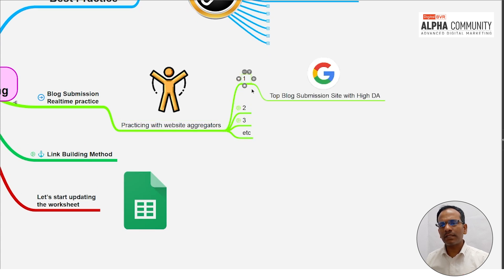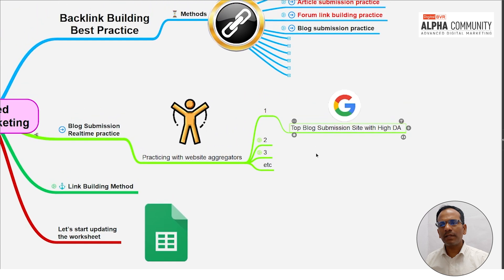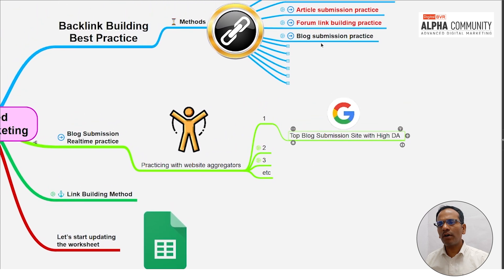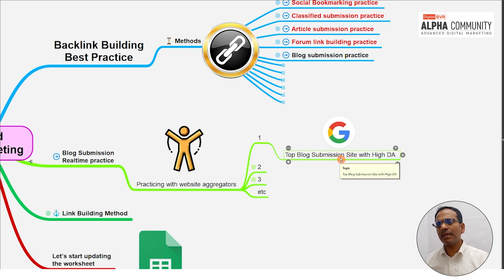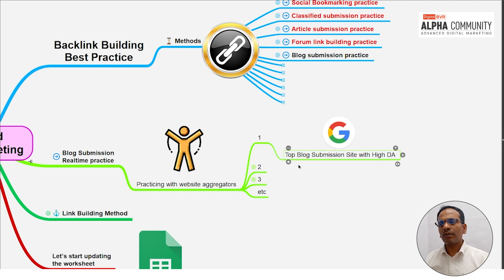The first step is to find top blog submission sites with high DA. We search for blog submission, forum link building submission sites with high DA, and also top classified submission sites with high DA. This is the best practice — search directly on Google.